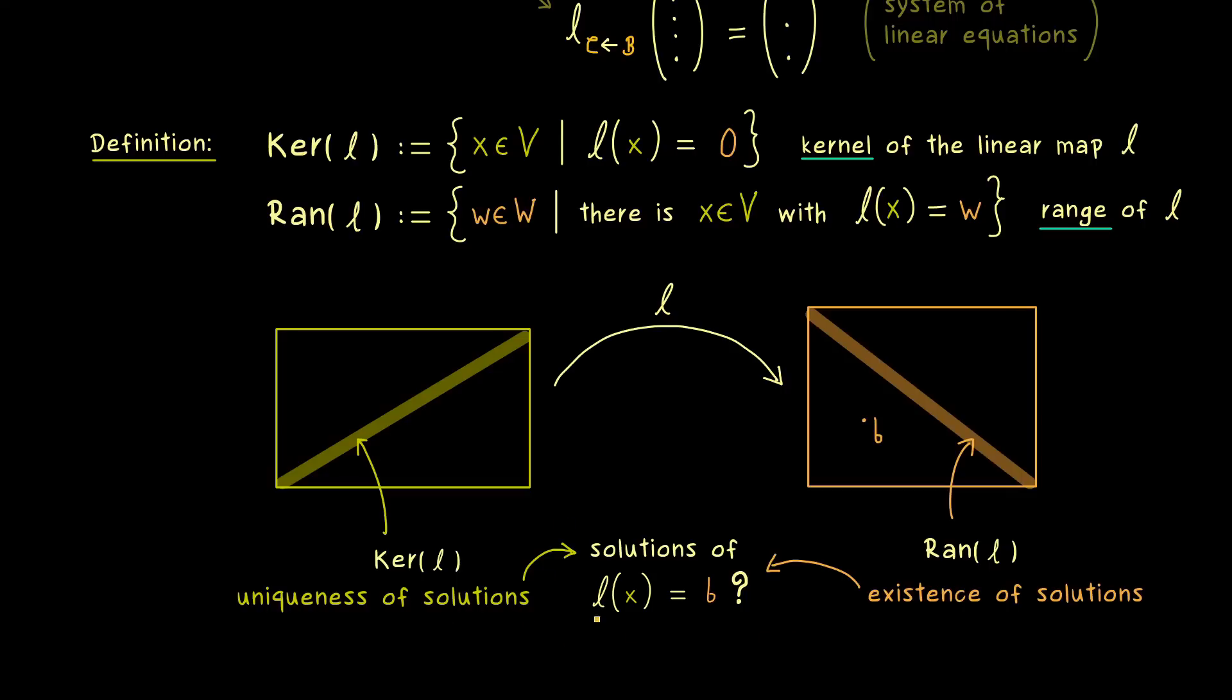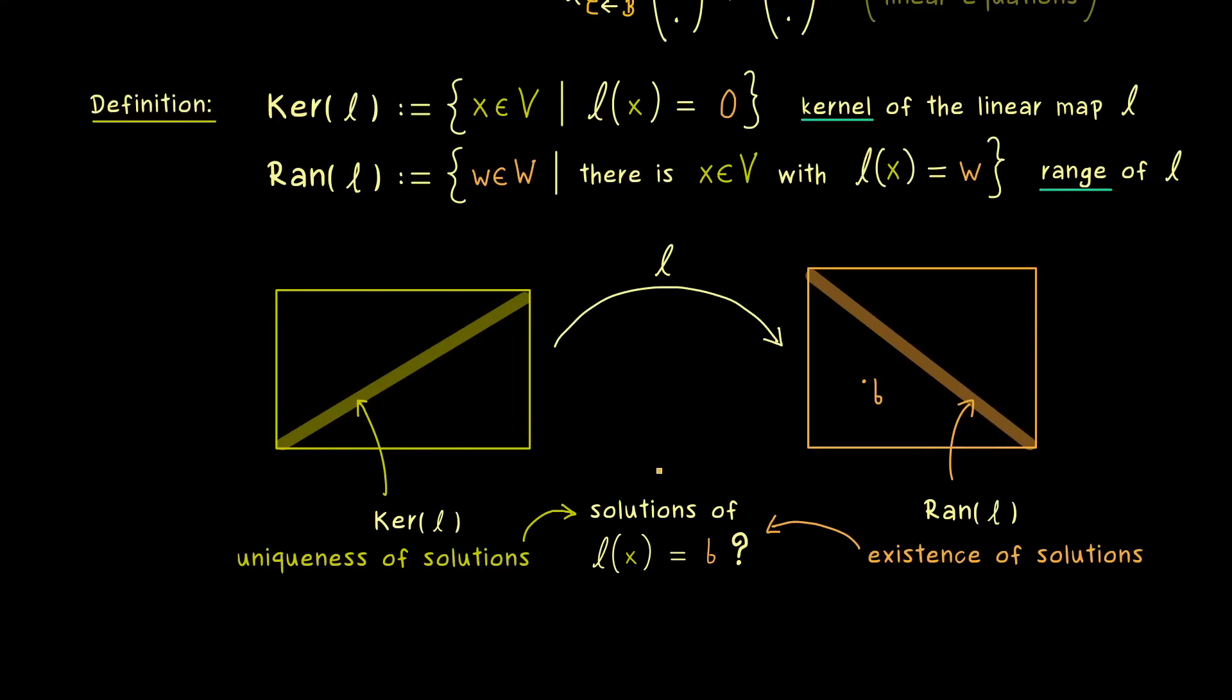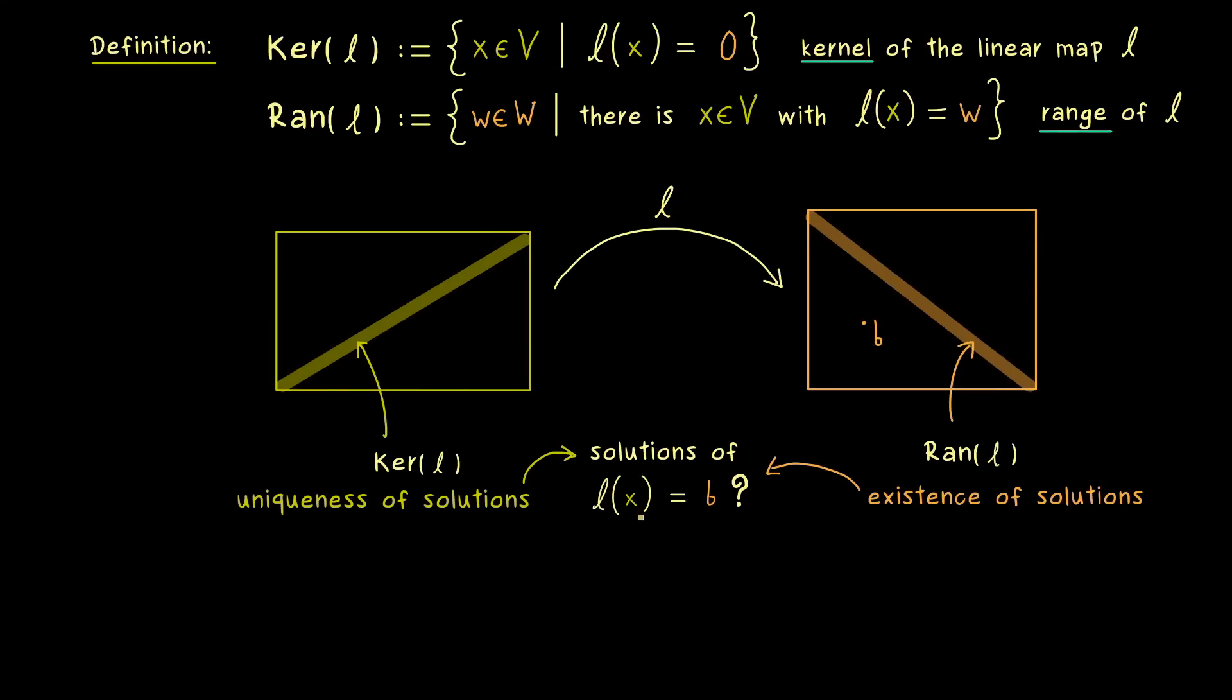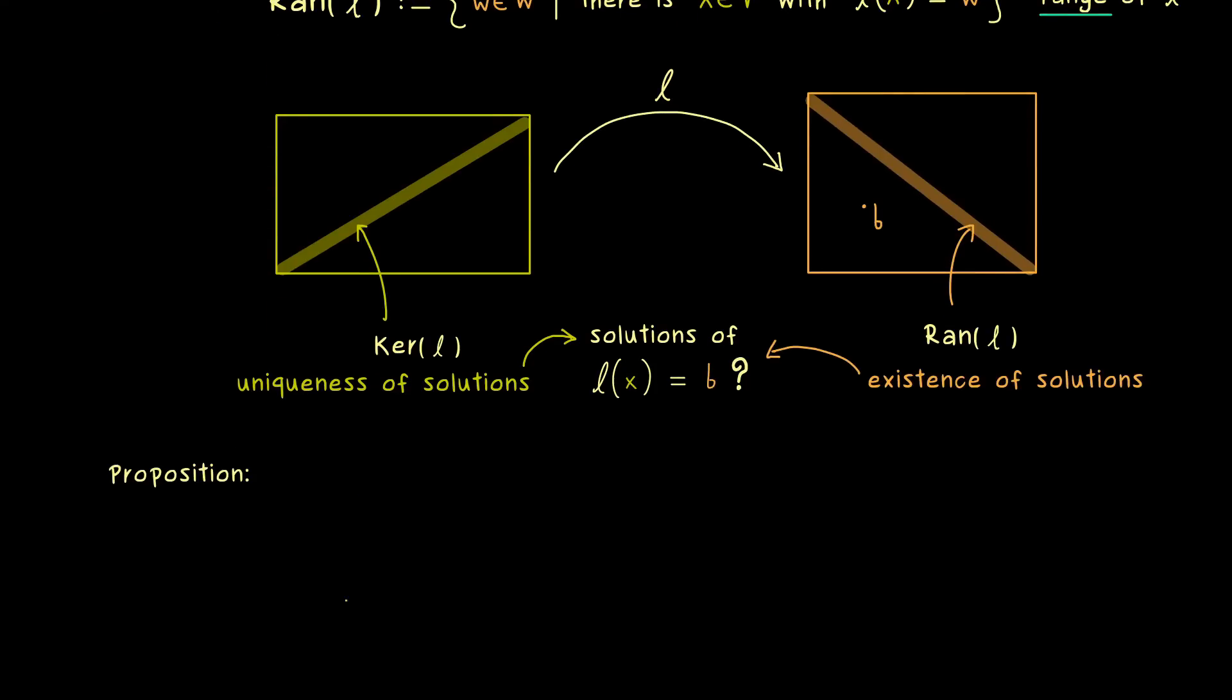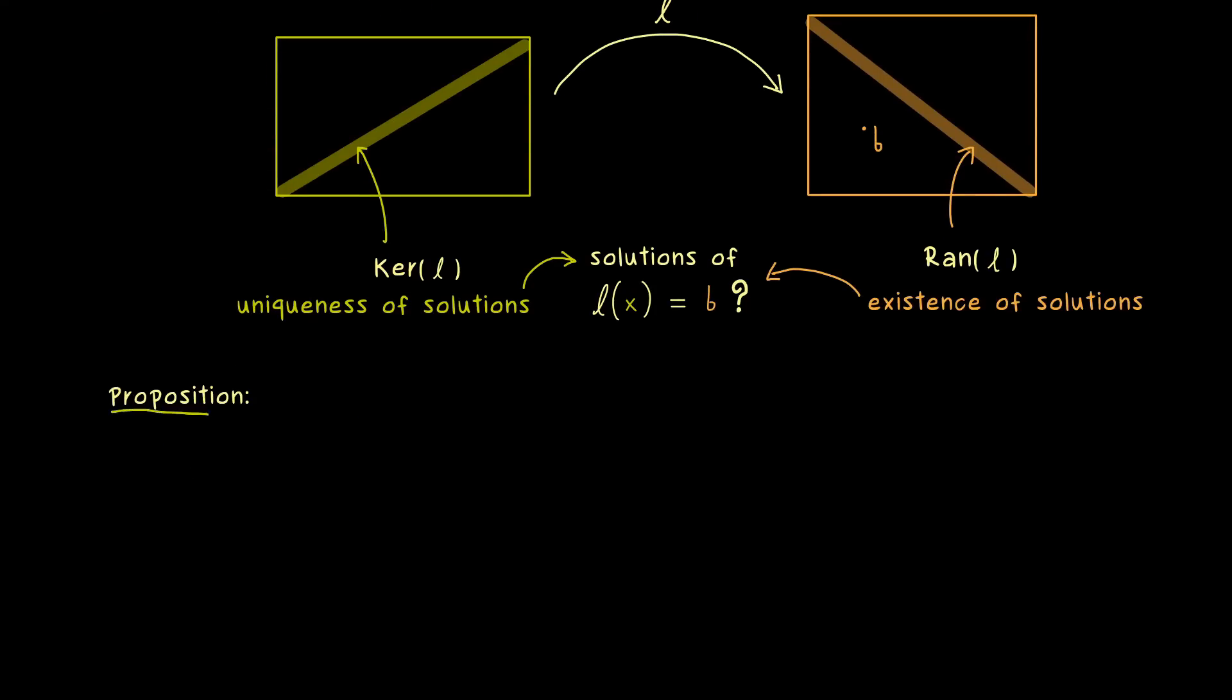Simply because in this case we can always add such a non-trivial kernel element to the given solution. And not so surprisingly, the solution set looks similar to what we have in the matrix case. Therefore, I would say let's put this into a quick proposition as well.